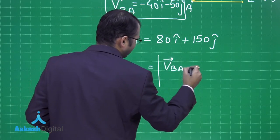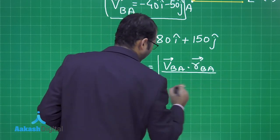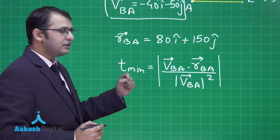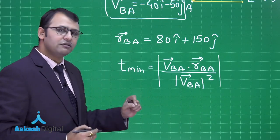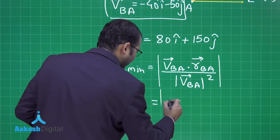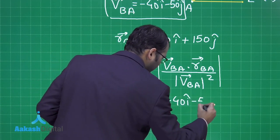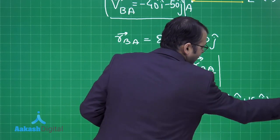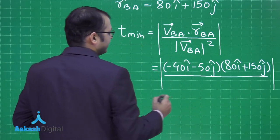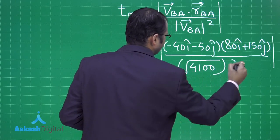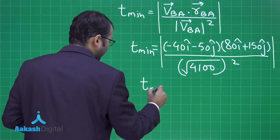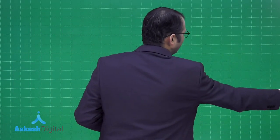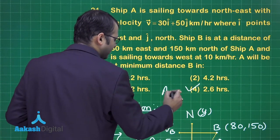To find the minimum time, we use the formula: t_min equals (v_BA dot r_BA) divided by the magnitude of v_BA squared. Substituting values: (minus 40î minus 50ĵ) dot (80î + 150ĵ) divided by the magnitude squared of the relative velocity, which involves the square root of 4100. Solving this gives t equals 2.6 hours. The correct answer is option number 4.